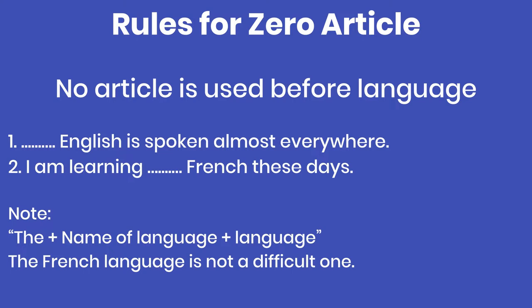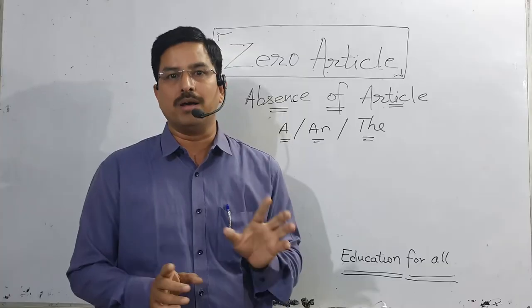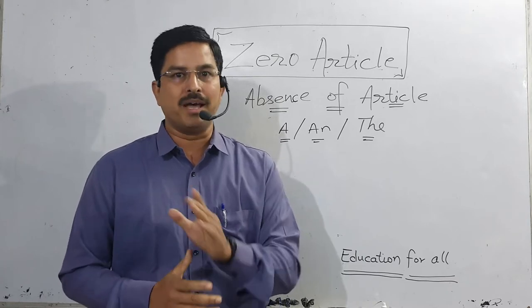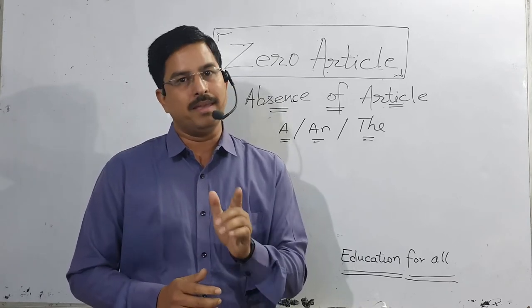And as noted on this slide: 'The + name of language + language' — if the word 'language' follows the language name, then 'the' is used. For example, 'The French language is not a difficult one.' If it were just 'French' alone, no article would come. But when 'language' is written after it, 'the' is used: 'The French language.' So remember: no article is used before a language name.